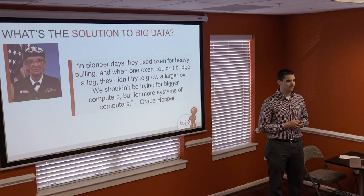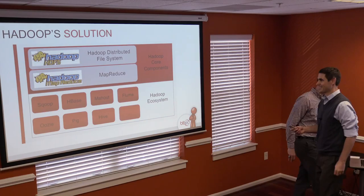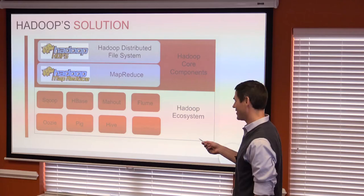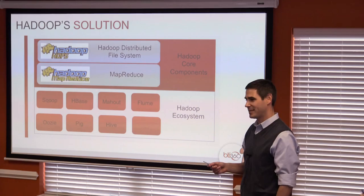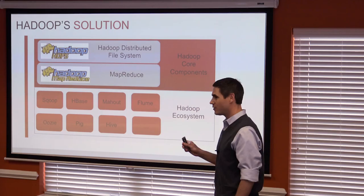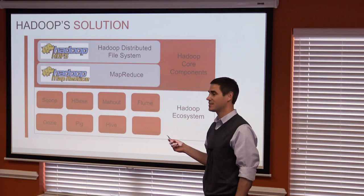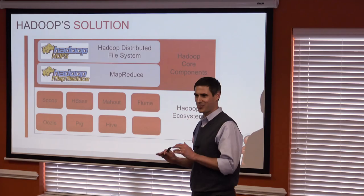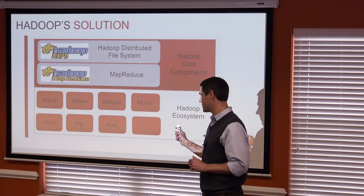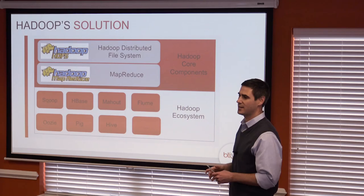I'm going to pass it off to Dave, who's going to talk about how Hadoop actually uses these ideas to solve our problem. Prior to taking the training course, I saw a scary graphic with all these boxes, and I let those boxes throw me a curve ball into thinking Hadoop was far more complicated than it actually is. There are really two core components to Hadoop: HDFS and MapReduce. All those ecosystem components exist to facilitate these core components.